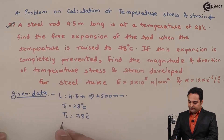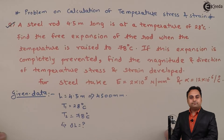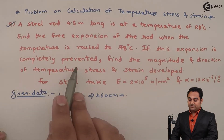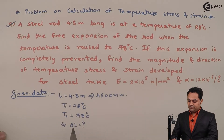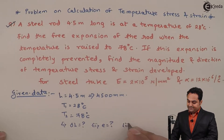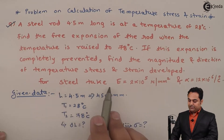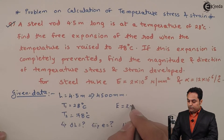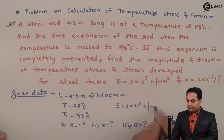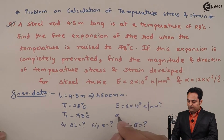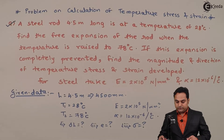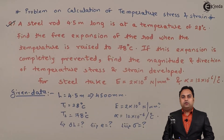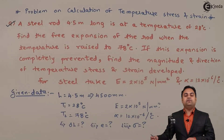We have to find free expansion delta L. Next, if this expansion is completely prevented, find the magnitude and direction of temperature stress and strain. For steel, Young's modulus is 2 into 10 raised to 5 Newton per mm square and alpha is 12 into 10 raised to minus 6 per degree Celsius.